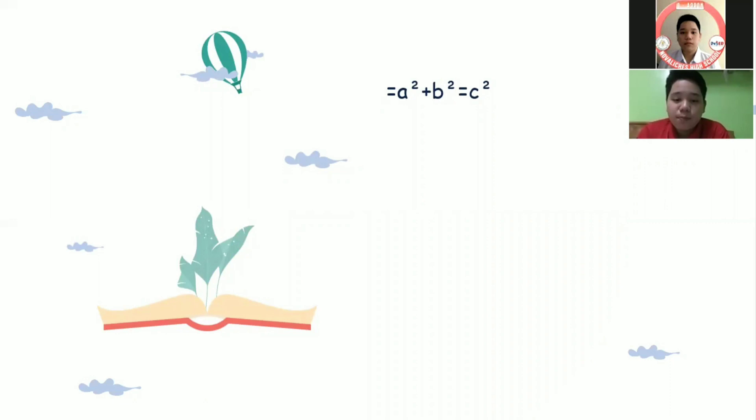Using the formula a squared plus b squared equals c squared by Pythagorean theorem, which means that the sum of the square of the two perpendicular sides of the right triangle